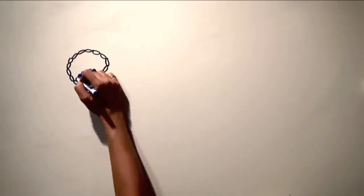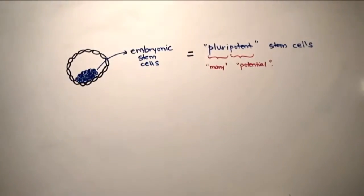Embryonic stem cells are especially promising. They can make all the cell types in the body and so are called pluripotent.